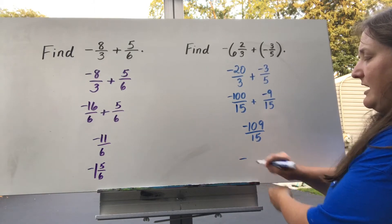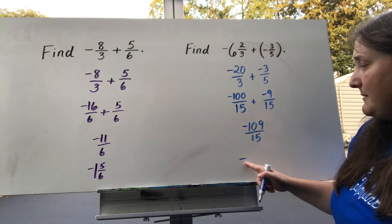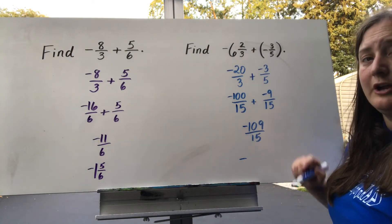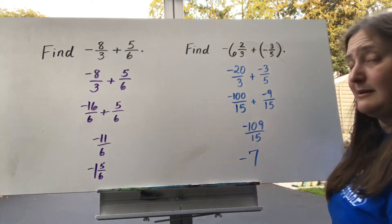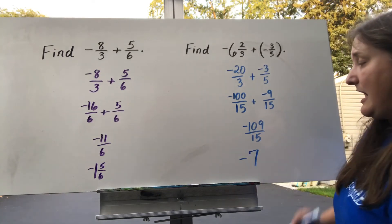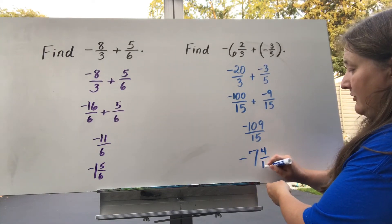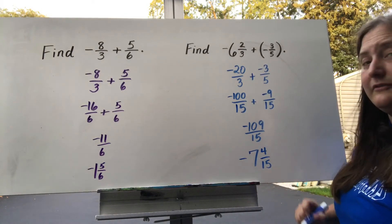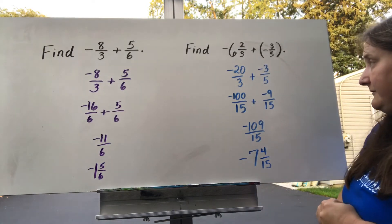Negative 100 and negative 9 is negative 109, and my denominator stays 15ths. I'm going to change this into a mixed number, carrying down my negative. 15 goes into 109 seven times, which gets us up to 105, so I have 4 leftovers. I always check to make sure I can't reduce my final answer — and I can't here. So my answer is negative 7 and 4 fifteenths.